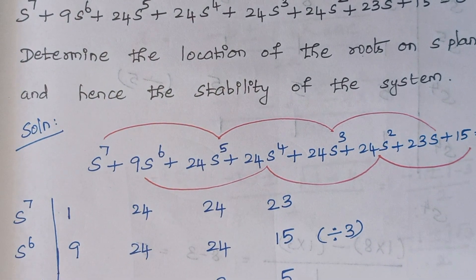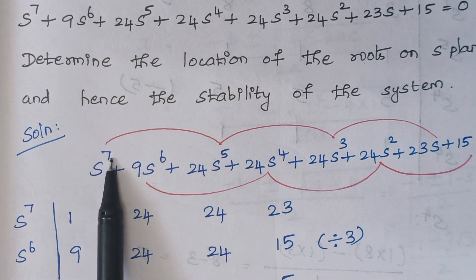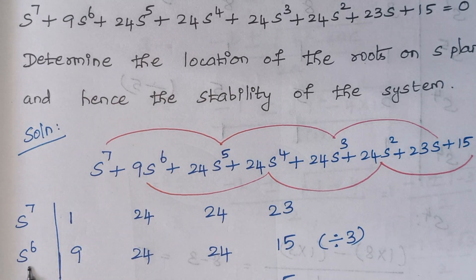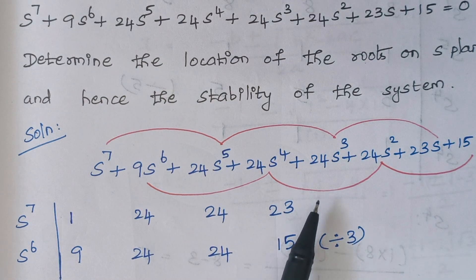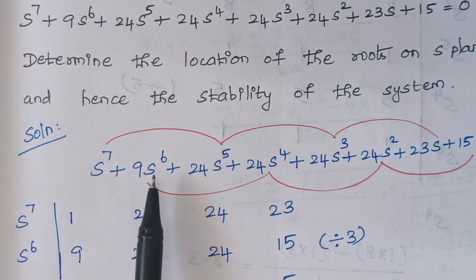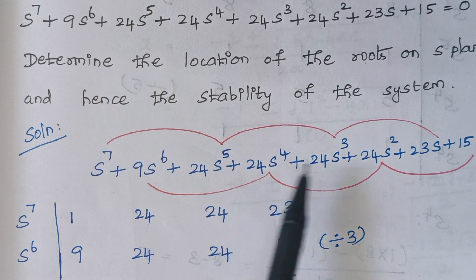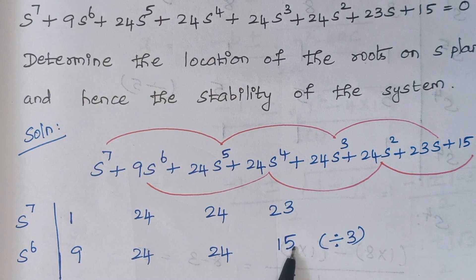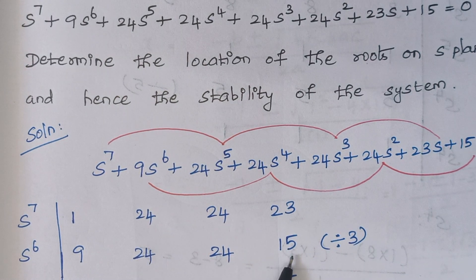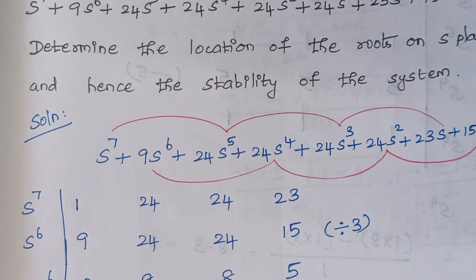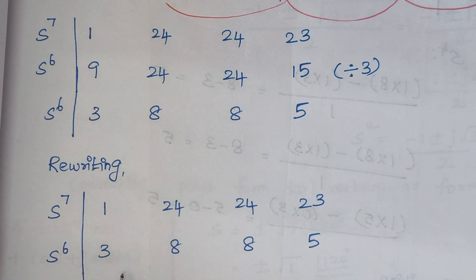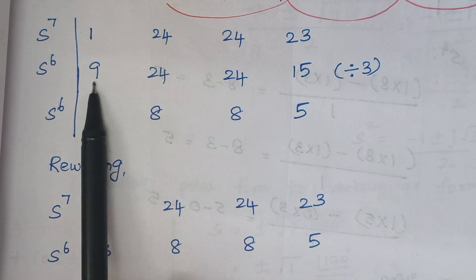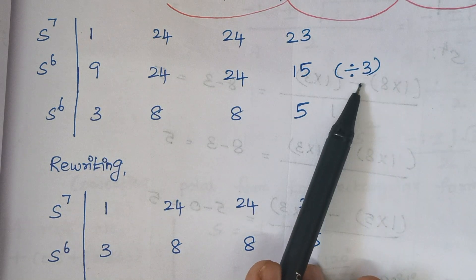The next step is forming the Routh array. The coefficient of S to the power 7 is 1, S to the power 5 is 24, S to the power 3 is 24, and S to the power 1 is 23. For S to the power 6: coefficient is 9, S to the power 4 is 24, S squared is 24, and S to the power 0 is 15. Since all numbers in the second row are divisible by 3, dividing by 3 gives 3, 8, 8, and 5 — these are the simplified numbers for the S^6 row.